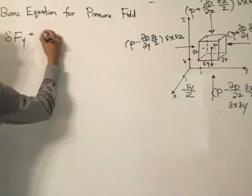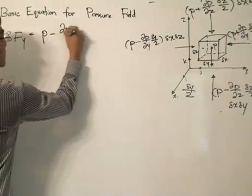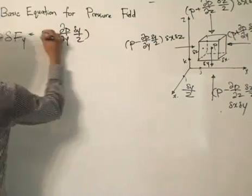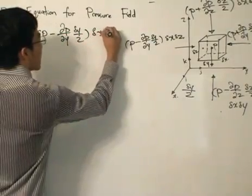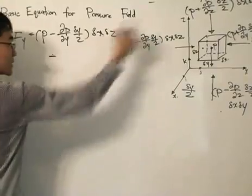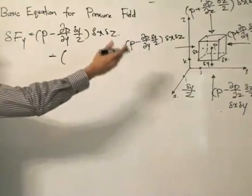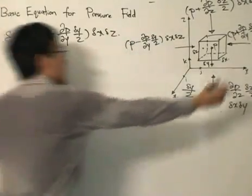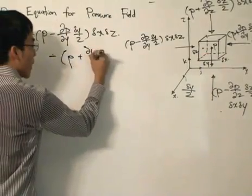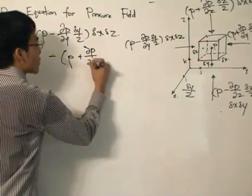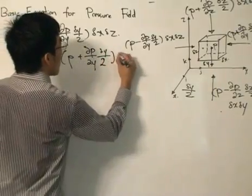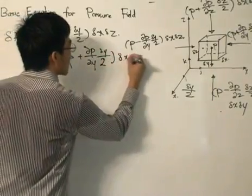So it equals P take away partial P over partial y times delta y divided by 2, times delta x, delta z, minus that quantity over there — because that quantity is going in the negative direction — so P plus partial P over partial y times delta y divided by 2, times delta x, delta z.